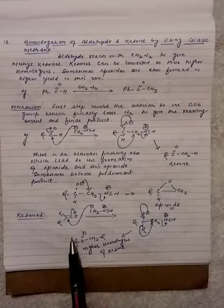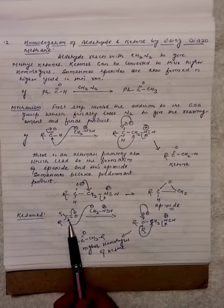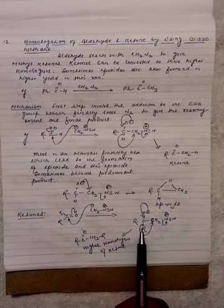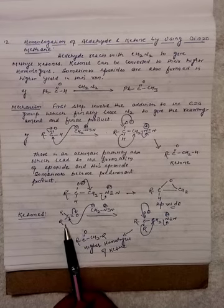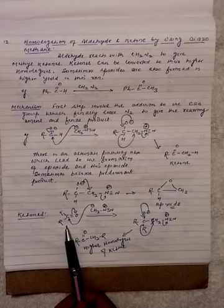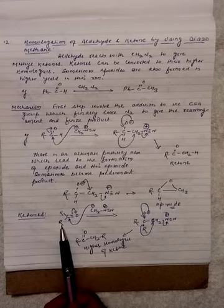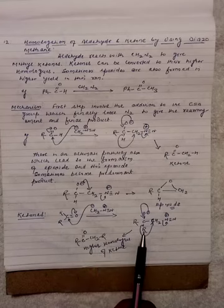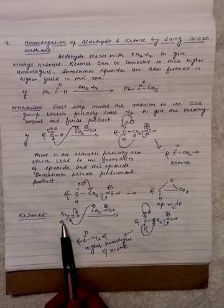Similarly, the mechanism happens in the case of ketones. The first step involves the attack of CH₂⁻ on the carbonyl carbon, forming an adduct. For an unsymmetrical ketone, migratory aptitude plays an important role and decides which will be the major product and which will be the minor product. In the case of a symmetrical ketone, any R group can migrate with equal tendency, giving only a single product.